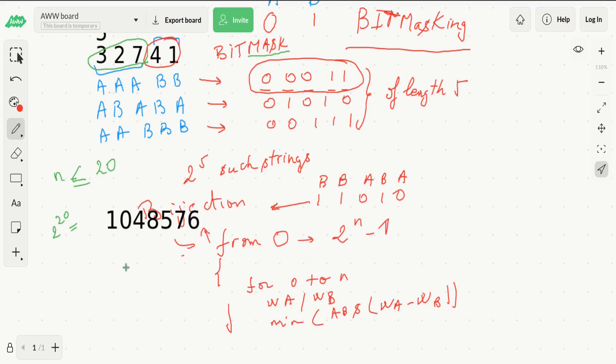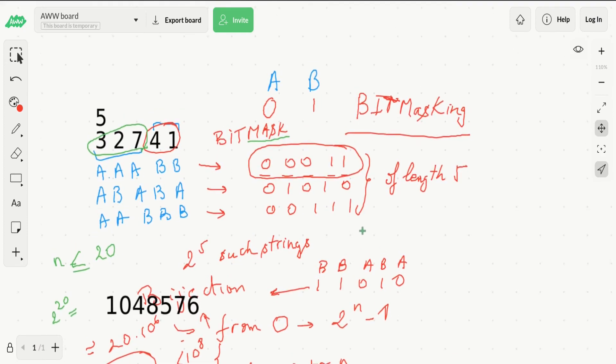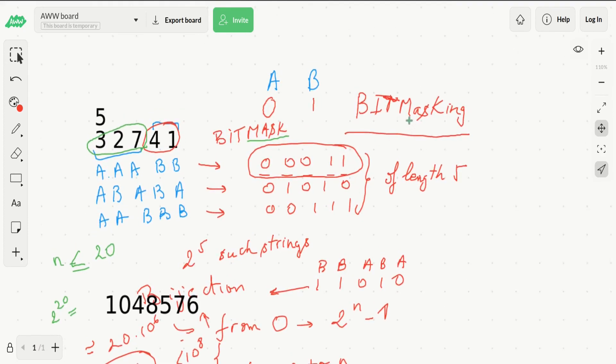Our total complexity would be n times 2 to the n, which is gonna be almost 20 million, which is less than 10 to the 8. So we will be fine, it will run under a second. This is it for the explanation. I hope I made the idea clear. Don't worry, we'll come up with different other problems that use this same idea of bit masking.